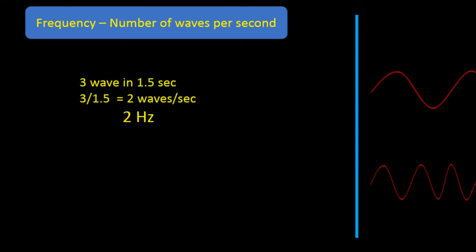The top one had three waves pass across that blue line in 1.5 seconds. To calculate frequency, we take the number of waves and divide it by time. So we have three divided by 1.5 seconds, which equals two waves per second. And the unit for frequency is the Hertz, abbreviated as Hz.